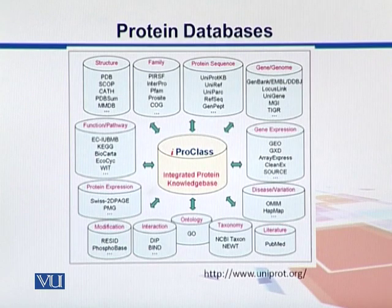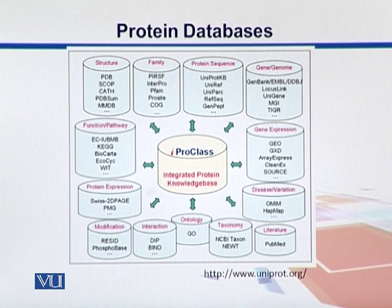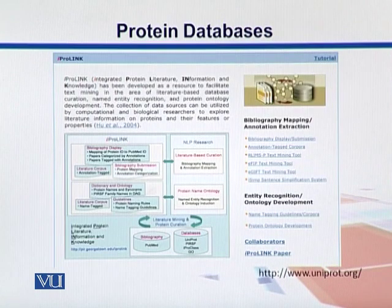InterPro is basically an integration of different protein resources. We can have sequences, protein expression data, protein modifications, and ontology information. InterPro can also integrate genomic data with proteomic data. InterPro link provides literature information and most of the relevant research papers.